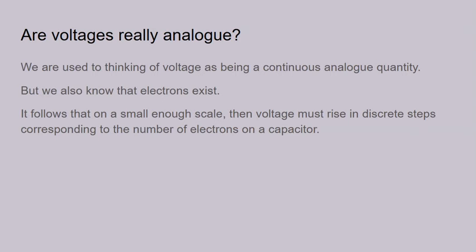But then you have to ask: are voltages really analogue? We're used to thinking of them as a continuous analogue quantity. But we also know that electrons exist, and electrons are discrete. And this implies that if you're considering things on a small scale, the voltage on a very small capacitor must rise in discrete steps as the number of electrons on it change. You might not think that's important, but ICs get small enough that this becomes an effect.